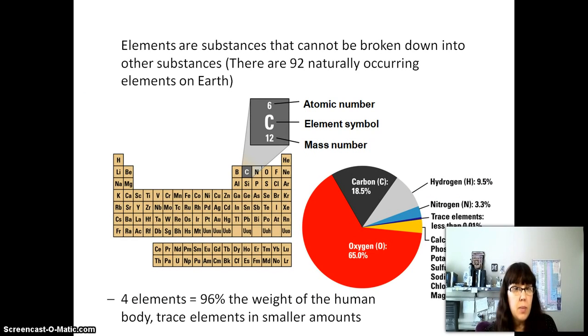Elements are substances that cannot be broken down into other substances, and there are 92 of these that are naturally occurring. They include things like carbon (symbol C), nitrogen (N), oxygen, aluminum (Al), sodium (Na), magnesium (Mg), potassium (K). Over here on this side, these are called the noble gases: helium, neon, argon, krypton, xenon.